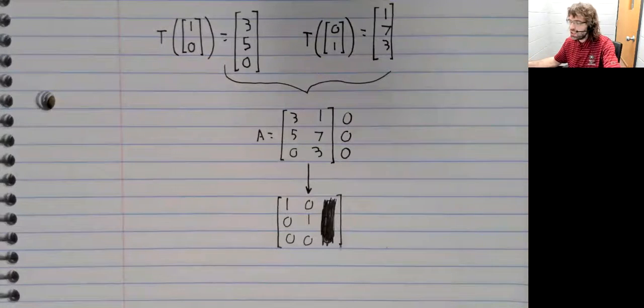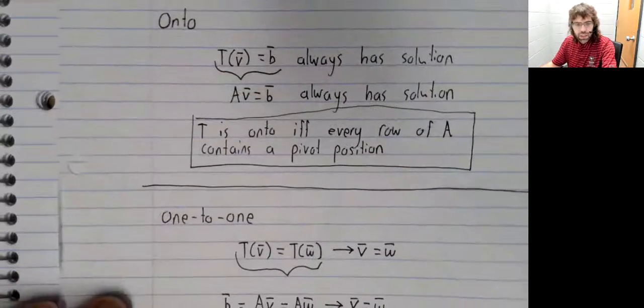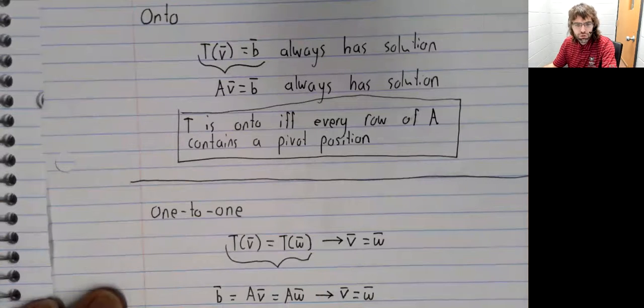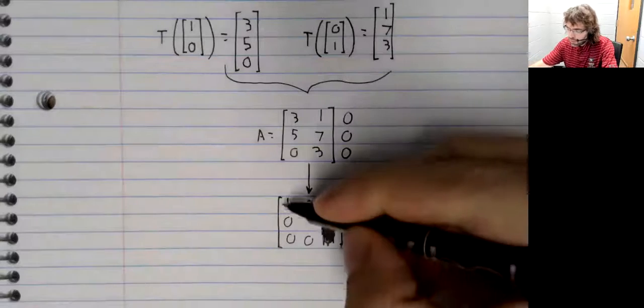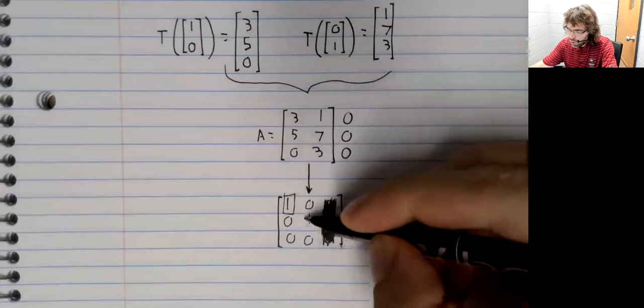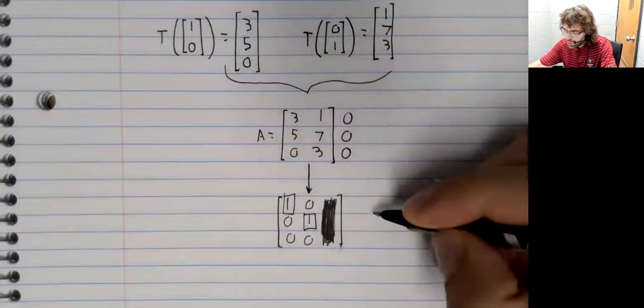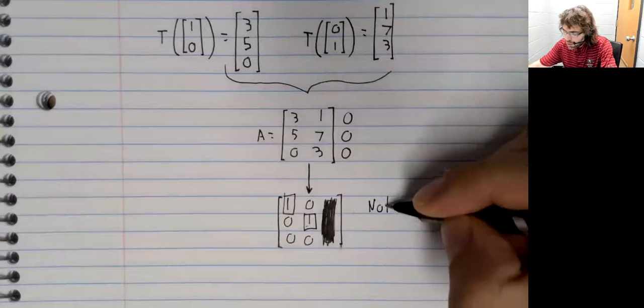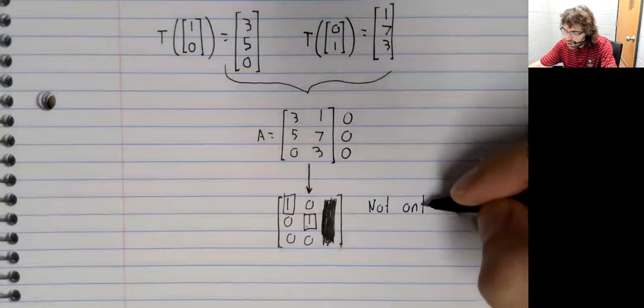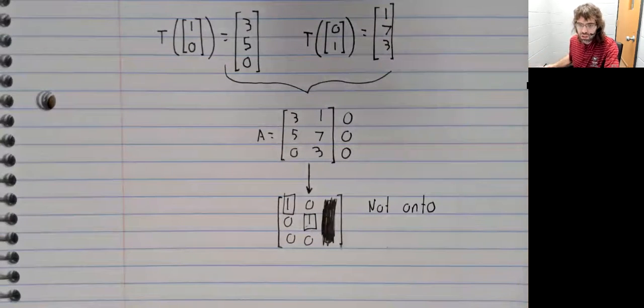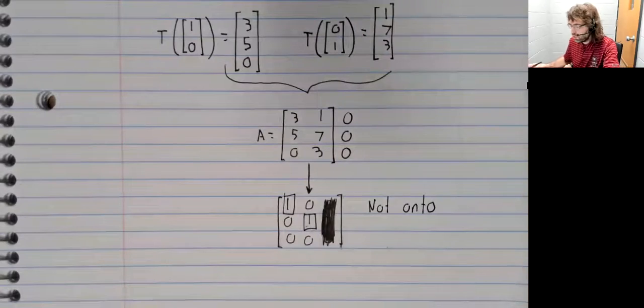And let's see. It's onto if every row contains a pivot position. Now we have two pivot positions. We can see that the third row doesn't. So this isn't onto.